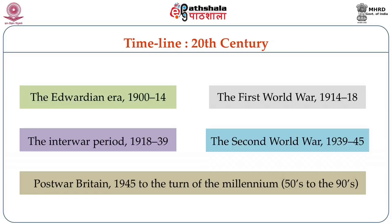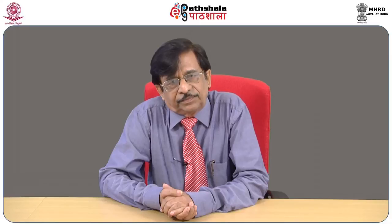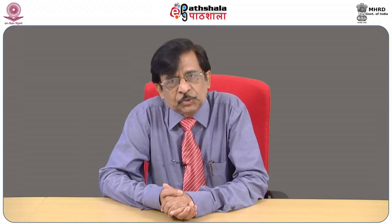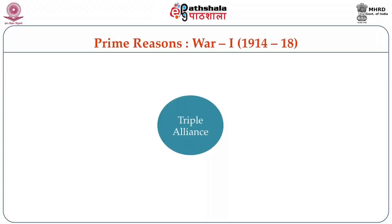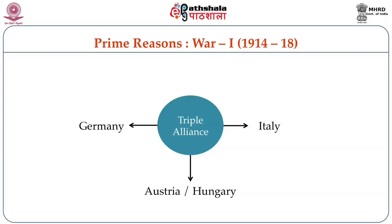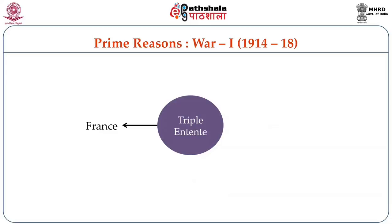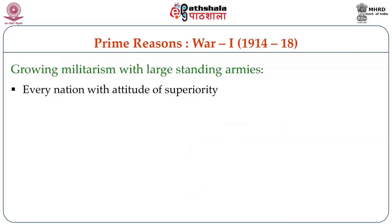The First World War resulted from a clash of interests between two groups of nations. On one side we have the Triple Alliance comprising Germany, Austria, Hungary and Italy. The Triple Entente comprised France, England and Russia. The era witnessed growing militarism with large standing armies.